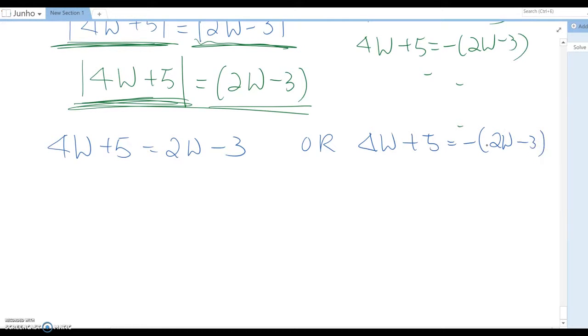So then it becomes just general equation. Subtract 2w at the same time minus 5 as well, then 2w = -8, so divide by 2, then w = -4.